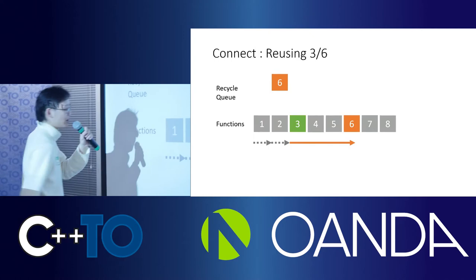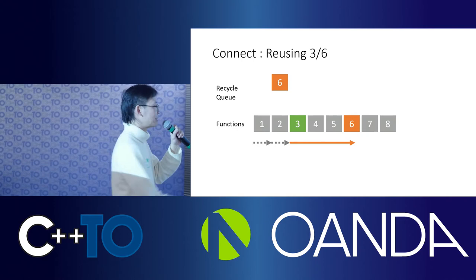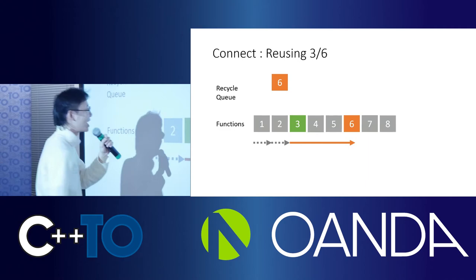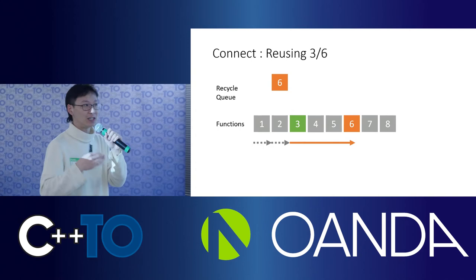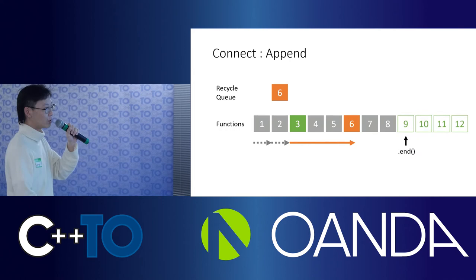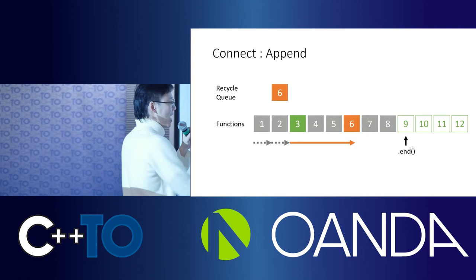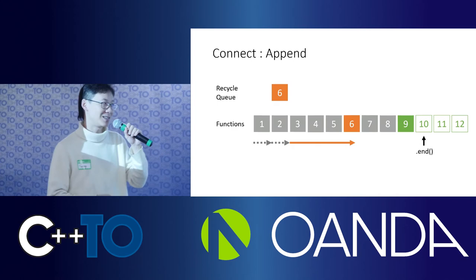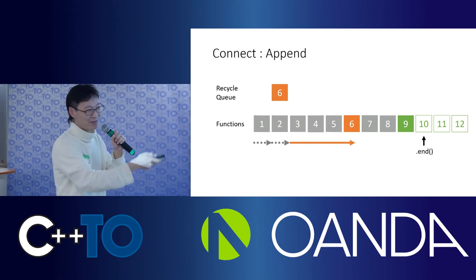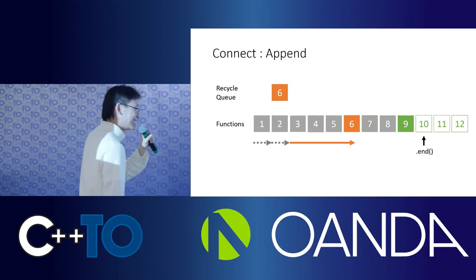If there is another element — element 6, for example — where the execution flow is still inside it, we cannot reuse it. We put it back into the recycle queue and append more storage to our array at the end, then initialize the function in place there. For the thread-safe parts, use TBB — Thread Building Blocks from Intel. That's much easier than writing it yourself.